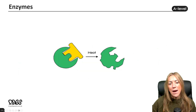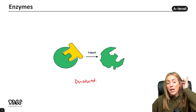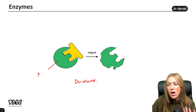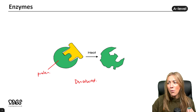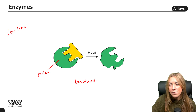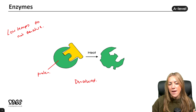Now let's think about denaturing. When an enzyme is heated or the temperature is increased, it can be denatured. Remember not to say the enzyme is 'killed' — it's not alive, it's simply a protein. High temperatures denature enzymes, and so do extreme pH values. Low temperatures do not denature enzymes; they just slow down enzyme activity.